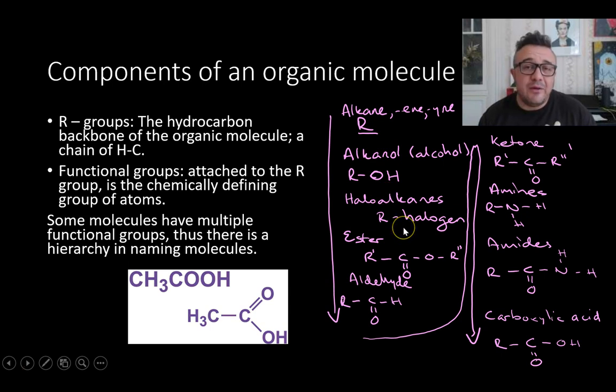But then if we see a haloalkane, in other words, it has a halogen attached to it, like a chlorine, a bromine, so forth, group seven element, that takes naming precedence over an alcohol. So if it has both an alcohol and a halogen, we name it based on the halogen. And all the way down to carboxylic acid.